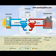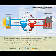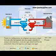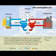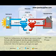Thanks to a cooling process, the refrigerant now returns to liquid form and, after the expansion valve has caused a reduction in pressure and temperature, it can once again absorb heat from the environment. And so, the ingenious cycle begins once again.